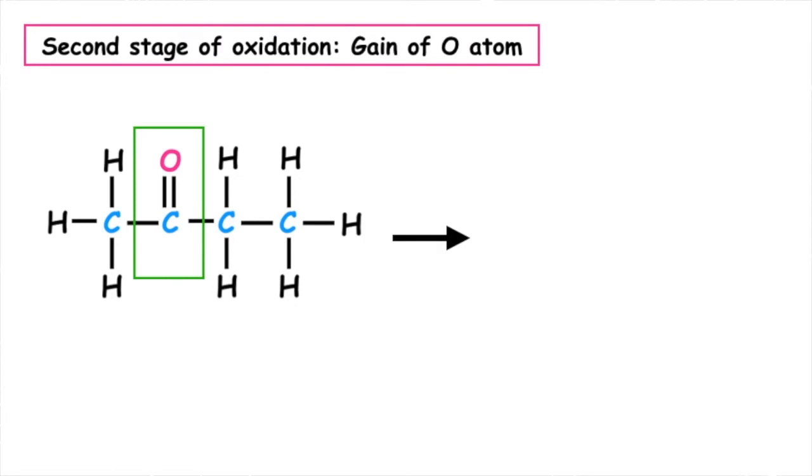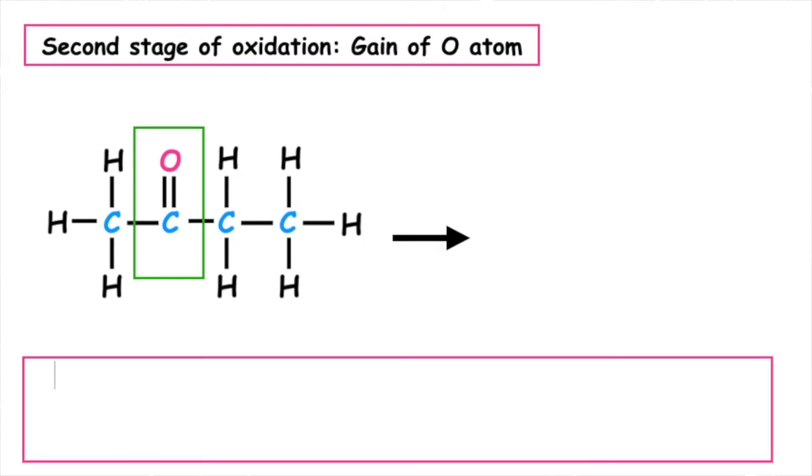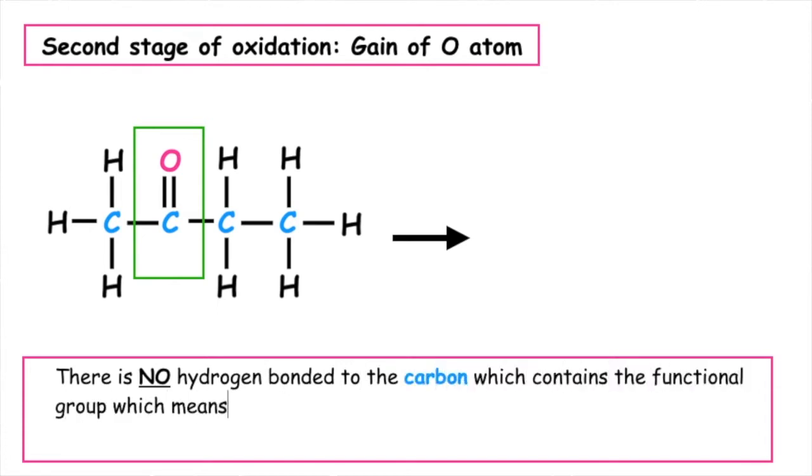The second stage of oxidation is the gain of an oxygen atom. Because there is no hydrogen bonded to the carbon which contains the functional group, this means that no second stage of oxidation will occur. A secondary alcohol will only oxidise to produce the ketone.